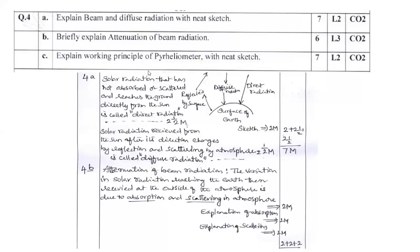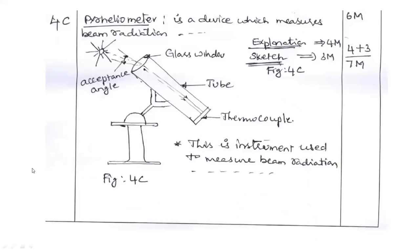Better if you have some typical diagram that also can be added. If you want you can add the diagram, some equations, some ratios, all the points you can add. Try to write technically. Question number 4c: Explain the working principle of pyreheliometer with a neat sketch. Weightage is 7 marks. So pyreheliometer - first of all write the purpose. It is a device which measures the beam radiation. That is why we are using pyreheliometer.